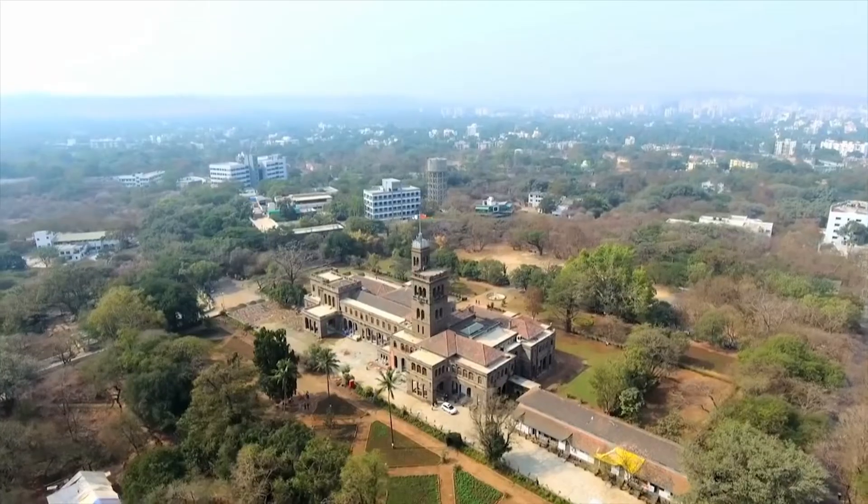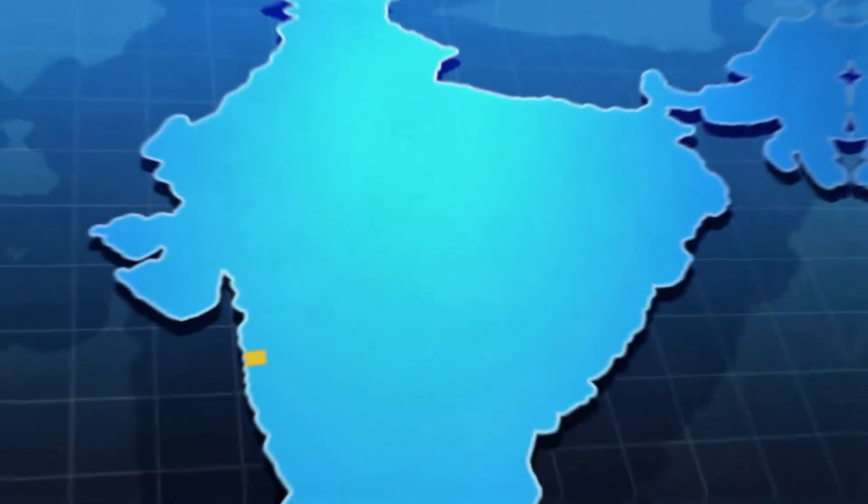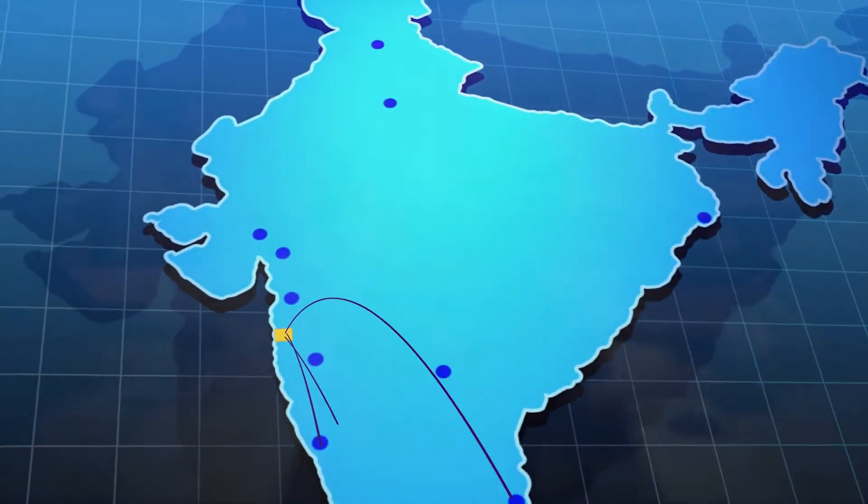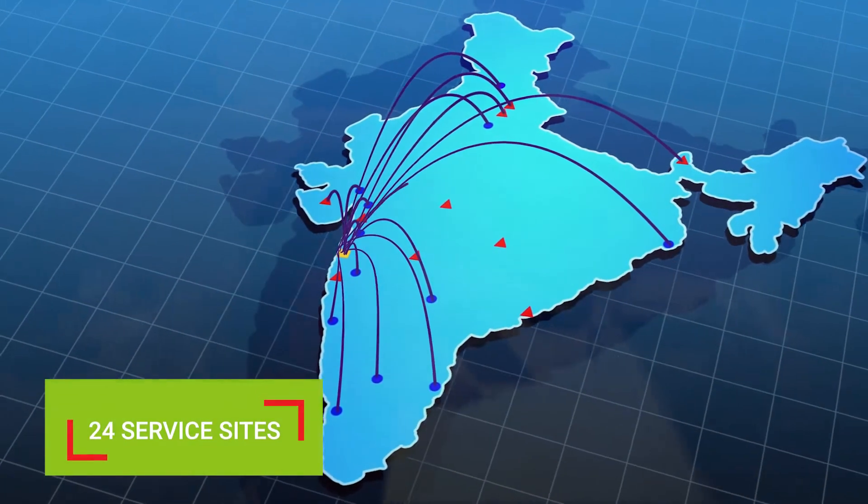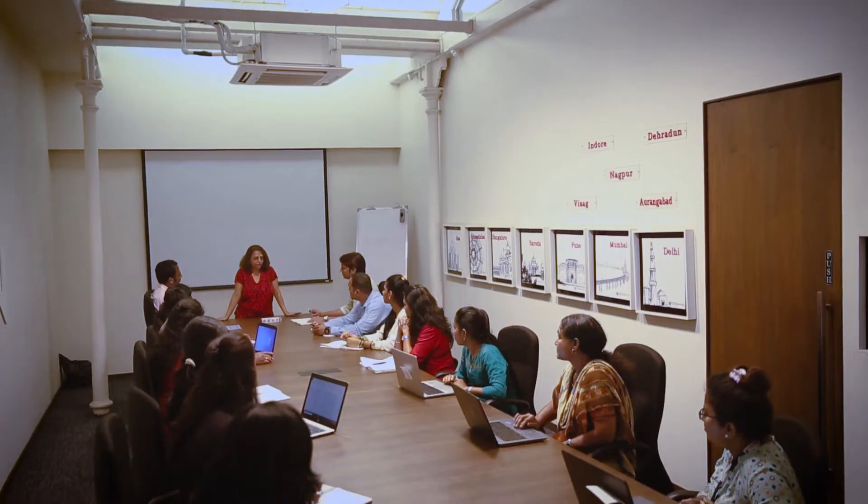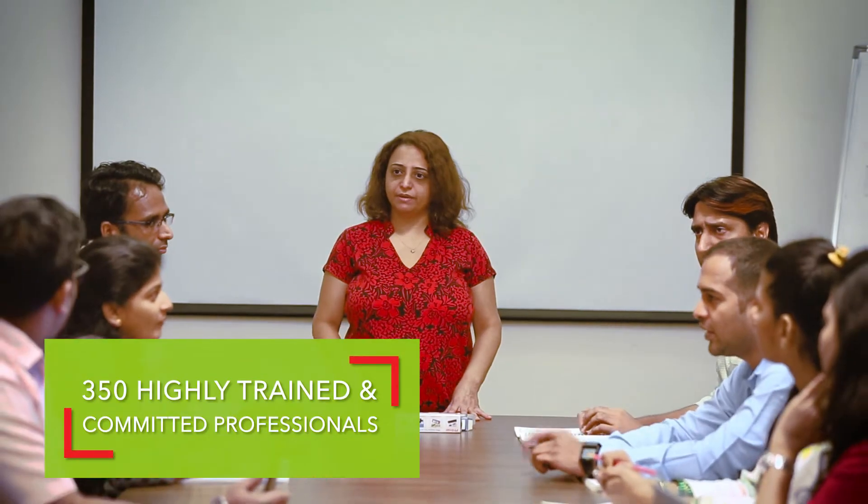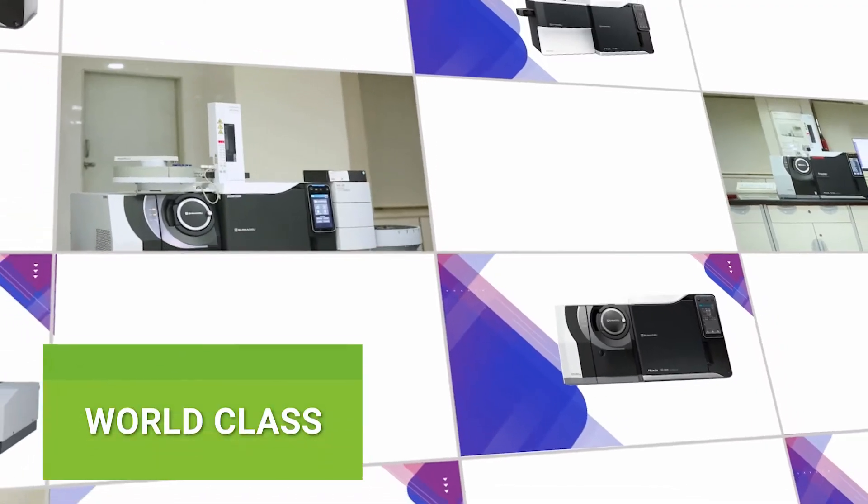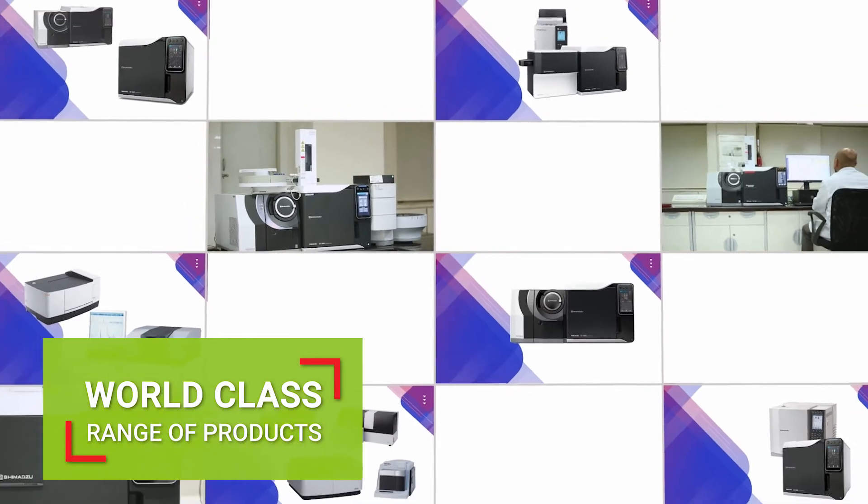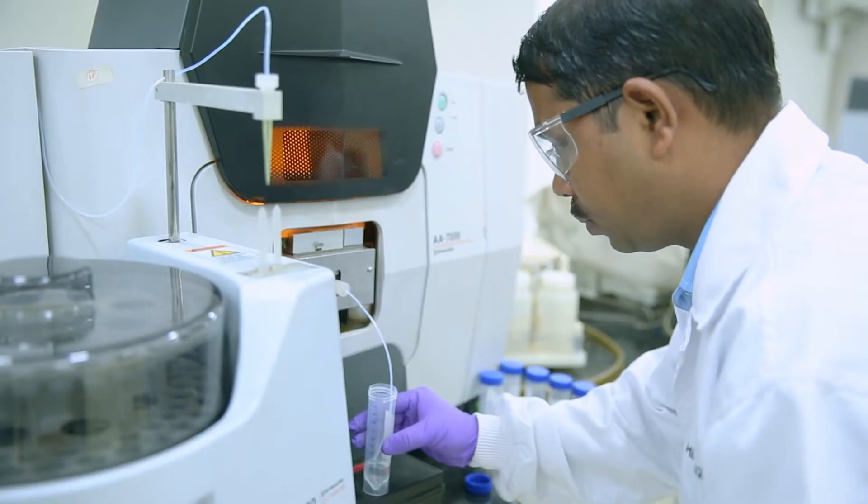Headquartered in Mumbai, Toshven has a network of 14 regional offices, 24 service sites, and a team of close to 350 highly trained and committed professionals. Recognized for its world-class range of products and commitment to excellence and customer service.